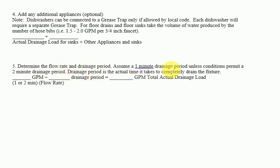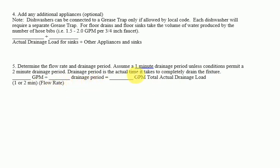Step 5 — Determine the flow rate and drainage period: Assume a 1-minute drainage period unless conditions permit a 2-minute drainage period. The drainage period is the actual time it takes to completely drain the fixture. Divide total GPM by the drainage period (1 or 2 minutes) to get the total actual drainage load in GPM.